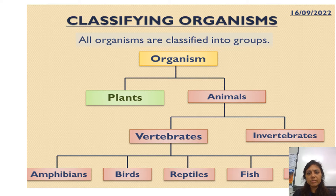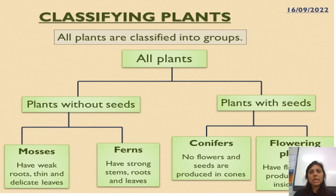Here is a range of animals that do have a backbone shown on the bottom of the screen. How do we classify plants? All plants are classified into two groups: plants without seeds and plants with seeds.